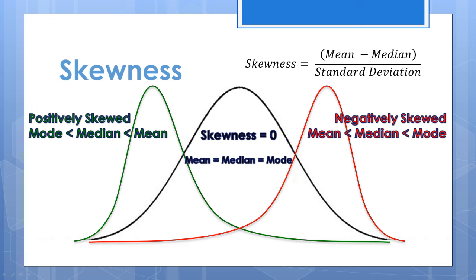To remember the meaning of a positive and negative skew, think of pulling on tails. Remember that the tail points towards the direction of the skew. The mean is also pulled in the direction of the long tail of the skew.